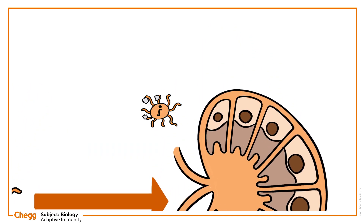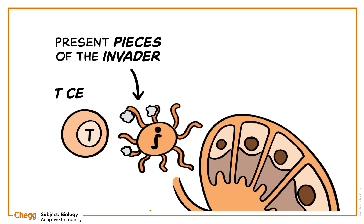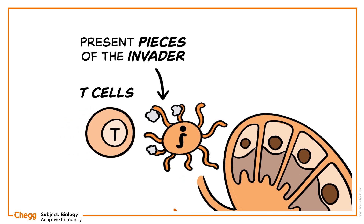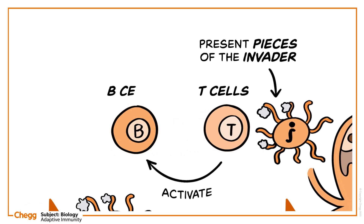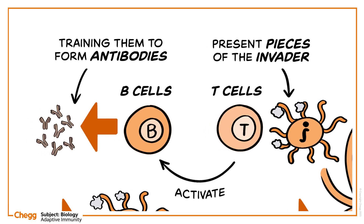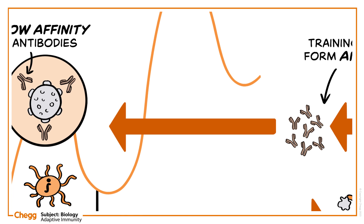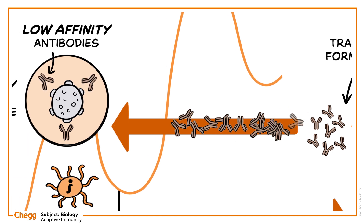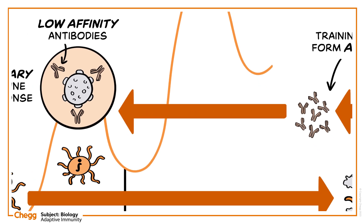Inside the lymph nodes, the dendritic cells present pieces of the invader to the T cells, which are the immune system's communications specialists. In turn, T cells activate the B cells, training them to form antibodies. These antibodies are the molecular weapon that targets the invader specifically. The immune system now mounts its ultimate defence. B cells release millions of antibodies.